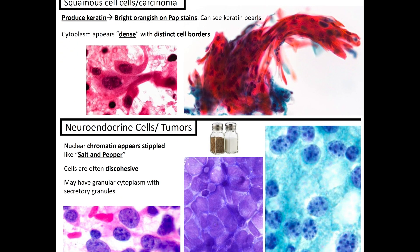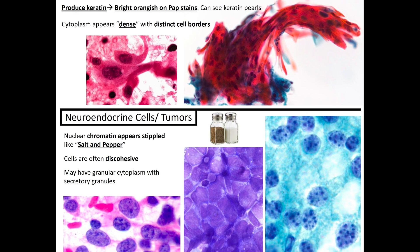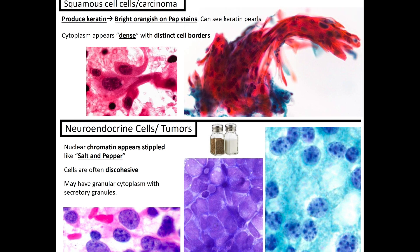With squamous cell carcinoma, it produces keratin — that bright orange color on Pap stain — and you can often see keratin pearls. Just because you see orange doesn't mean it's squamous cell carcinoma, but it can be associated with that diagnosis. The cytoplasm often appears dense with a distinct cell border.